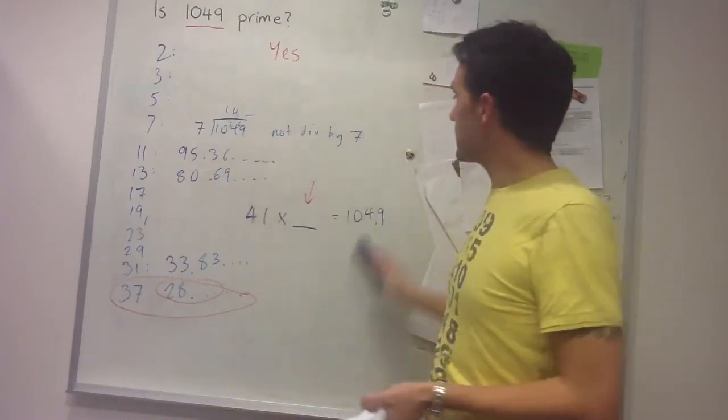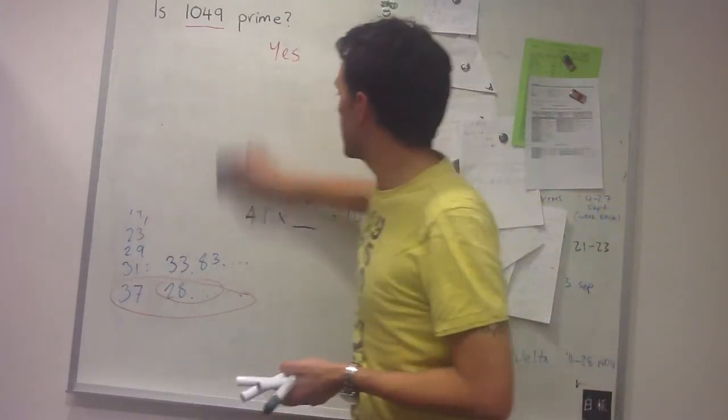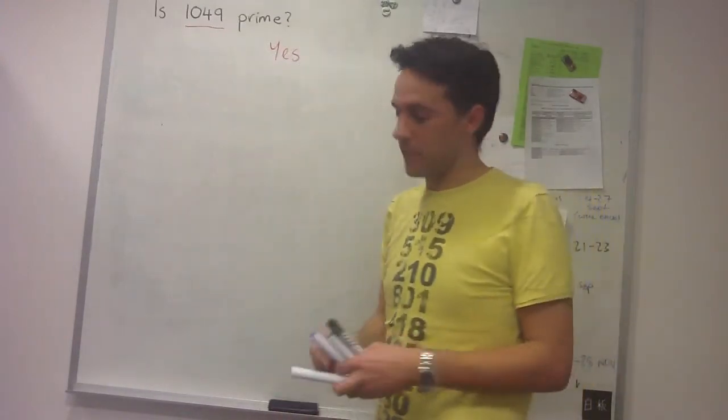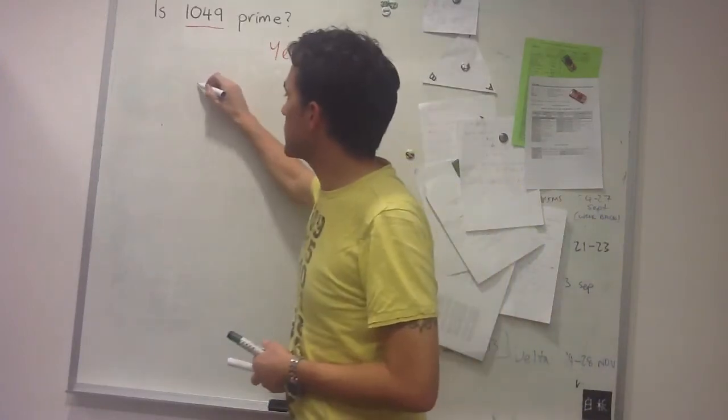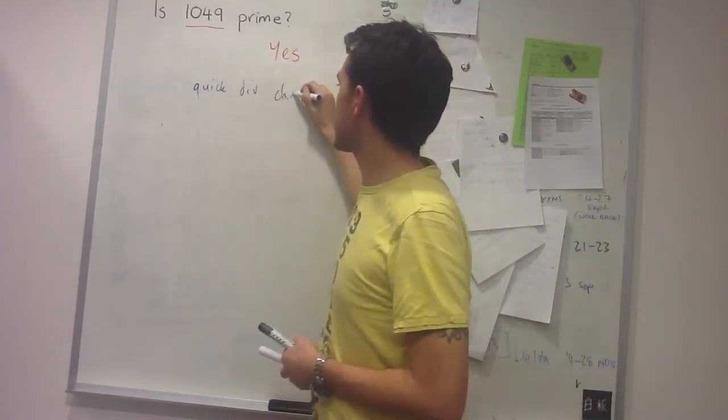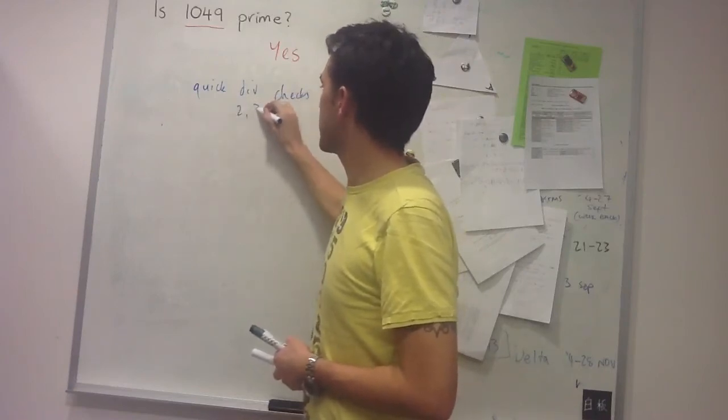So in general, I think there's sort of three steps to checking if a number's prime. First, use the quick divisibility tests, divisibility checks for 2, 3, and 5.